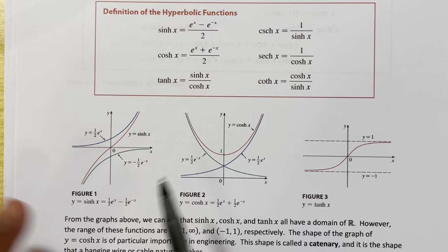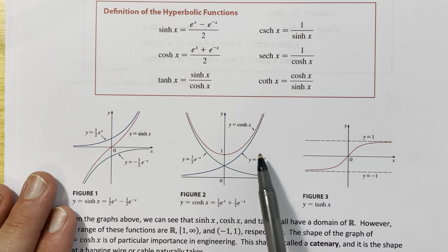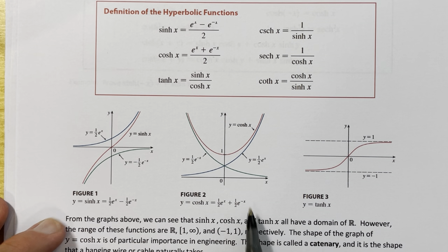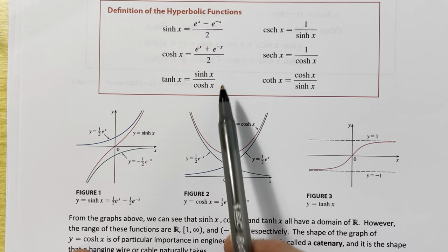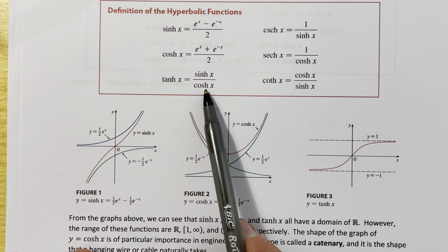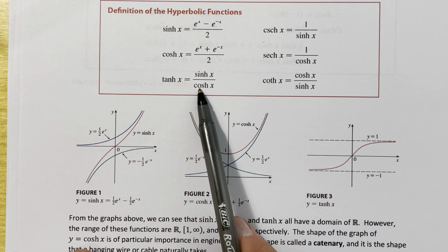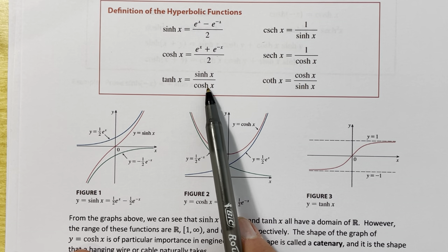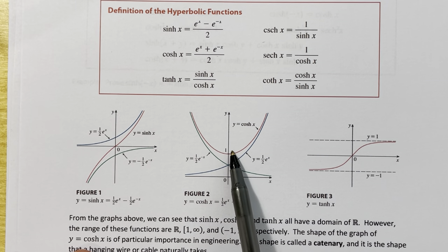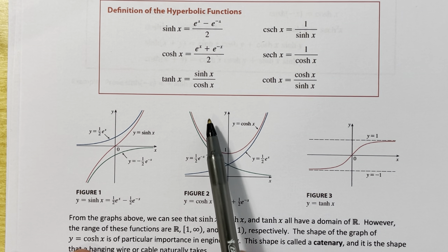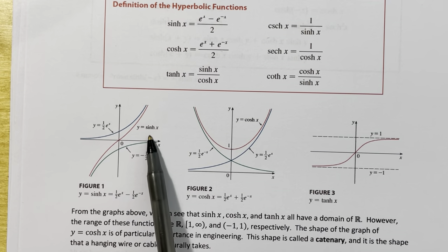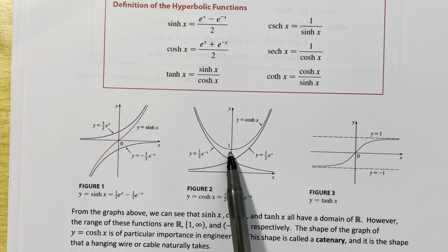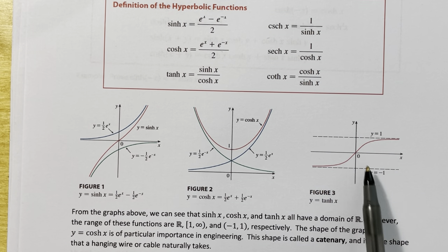The domain and range of each function are important to note. All three functions — sinh, cosh, and tanh — have a domain of all real numbers. Note that tanh has no discontinuities because cosh of x is never zero; the graph of cosh never goes below one. The range of sinh is all real numbers; the range of cosh is all numbers greater than or equal to one; and the range of tanh is the open interval from negative one to one.